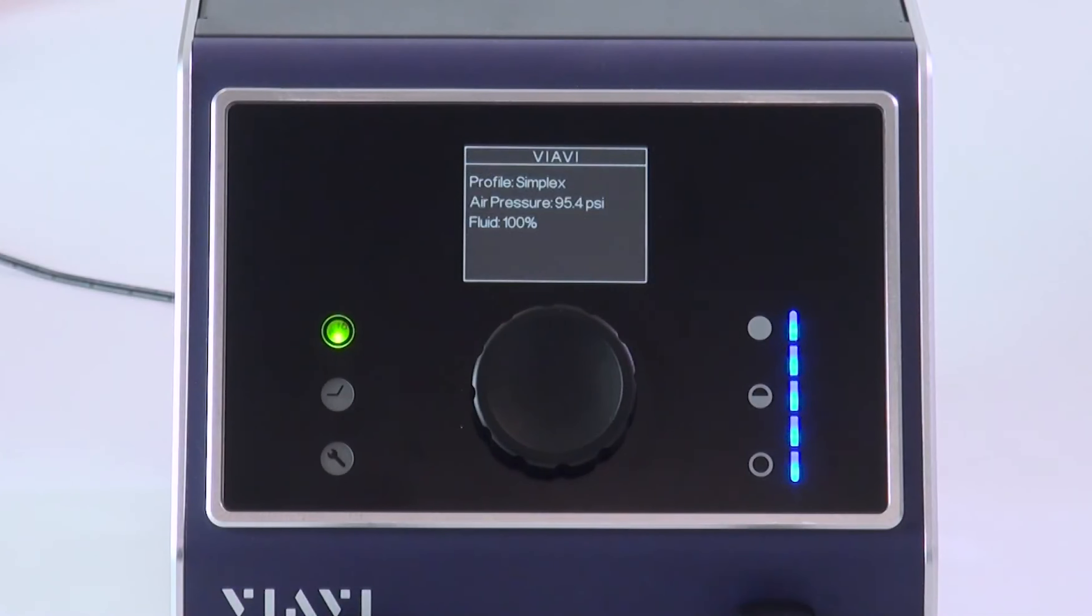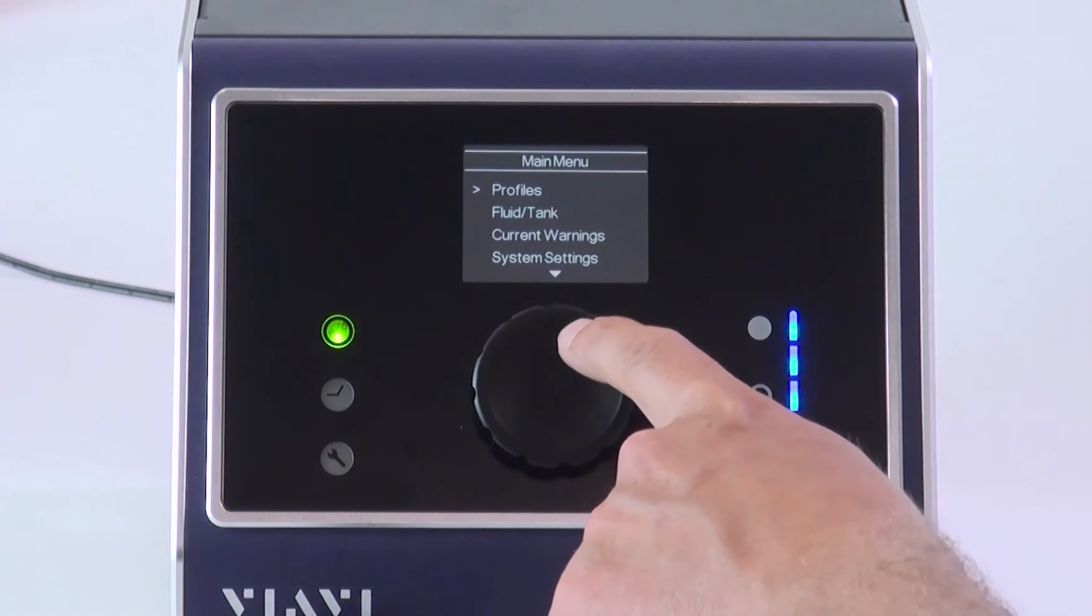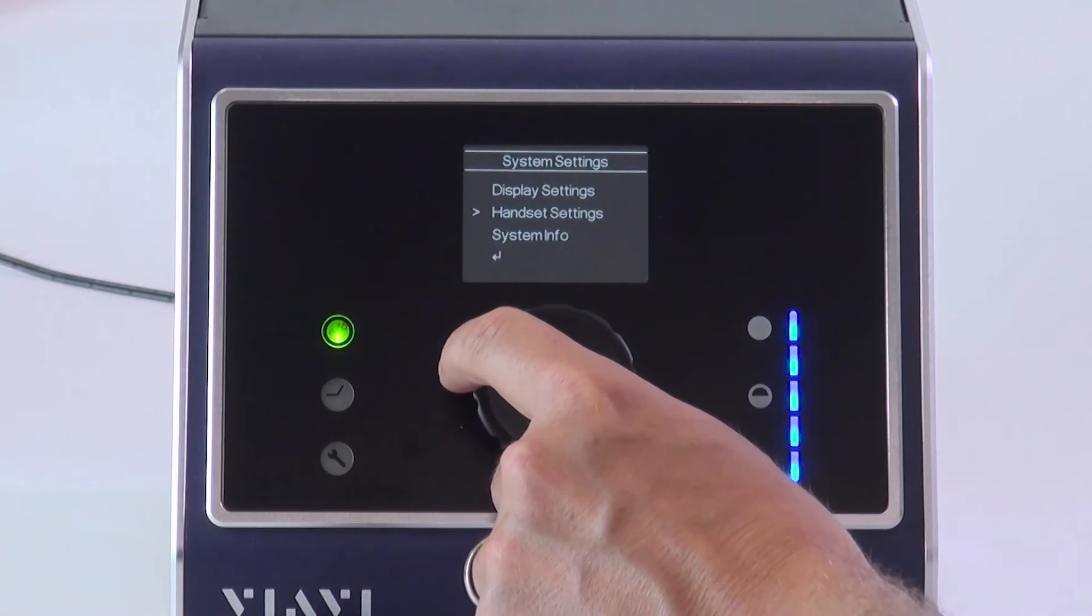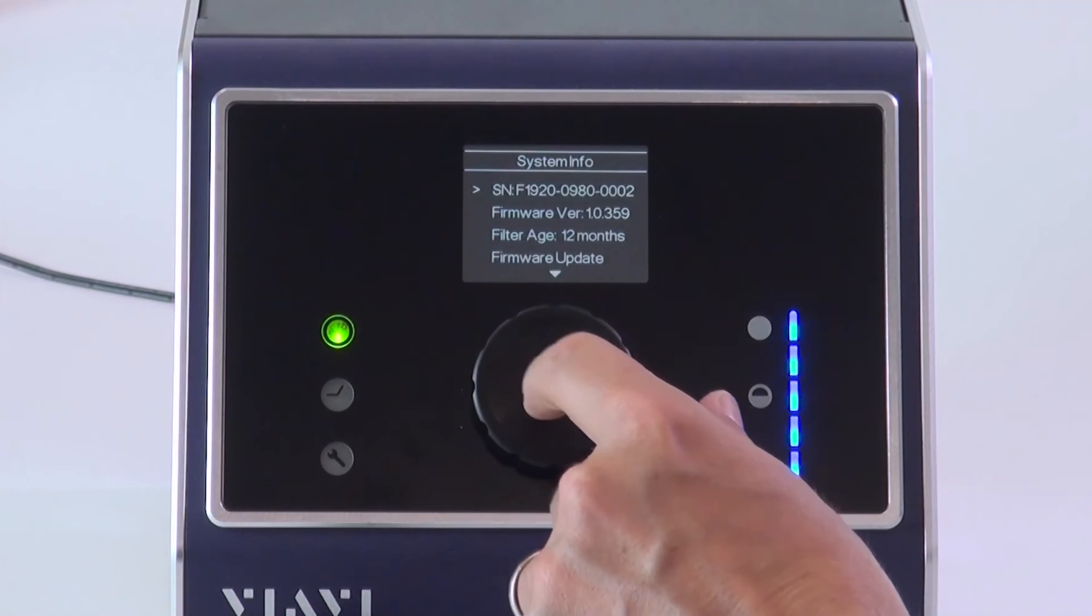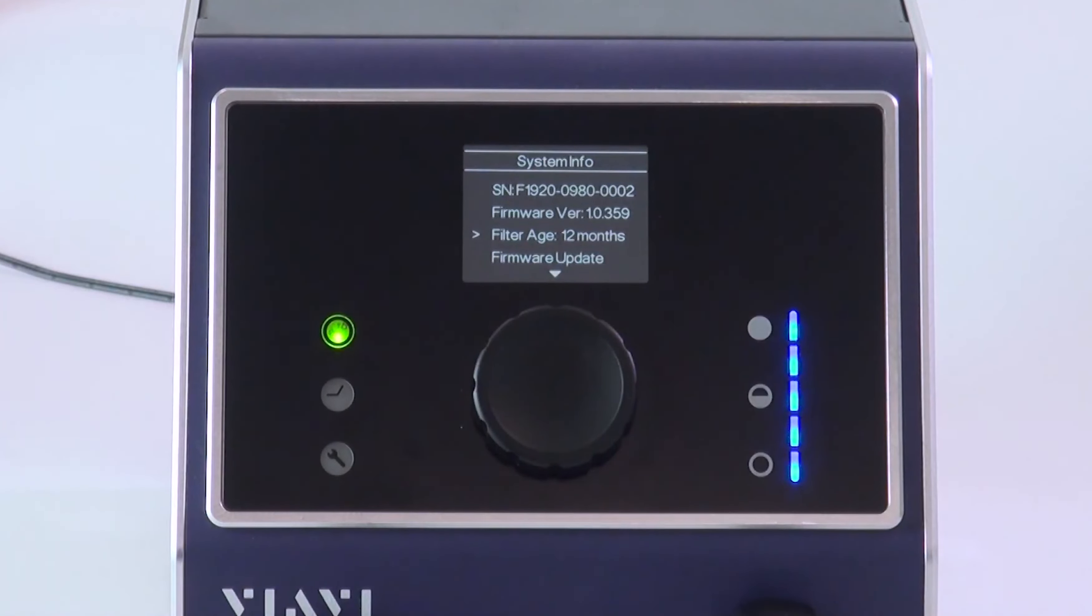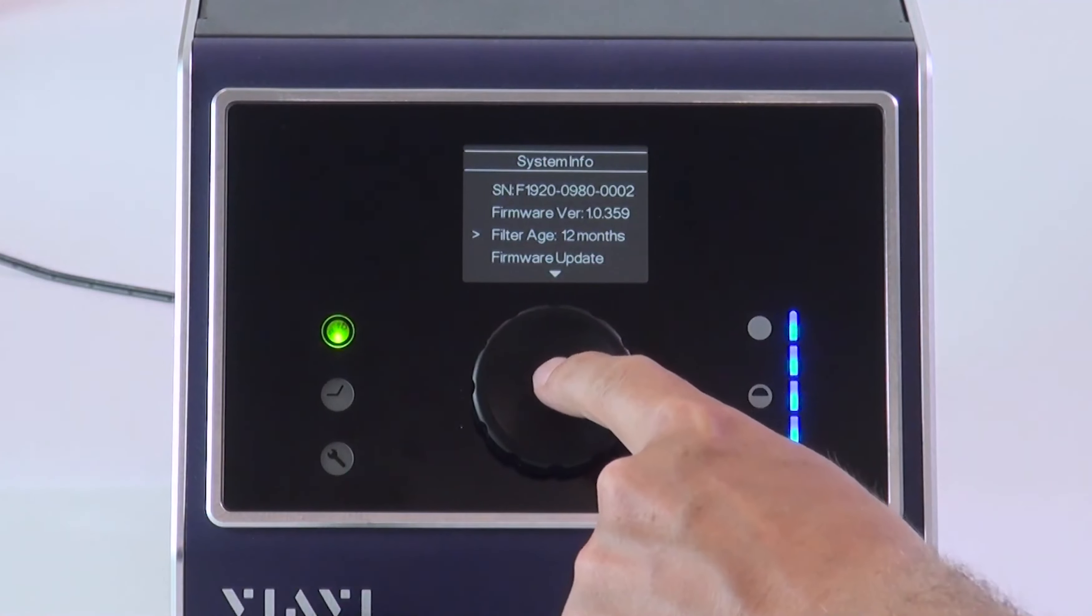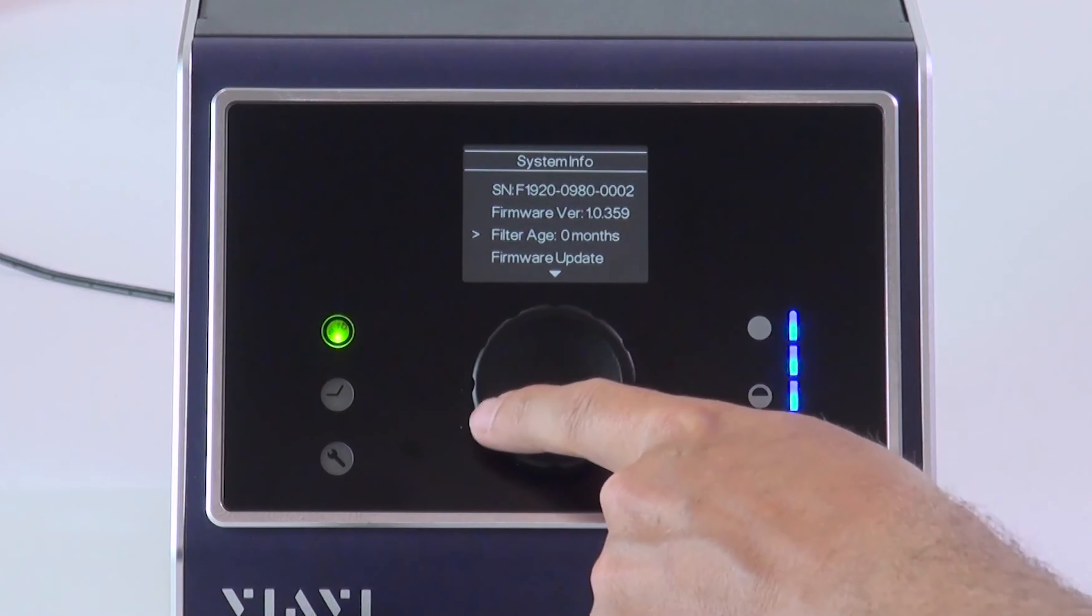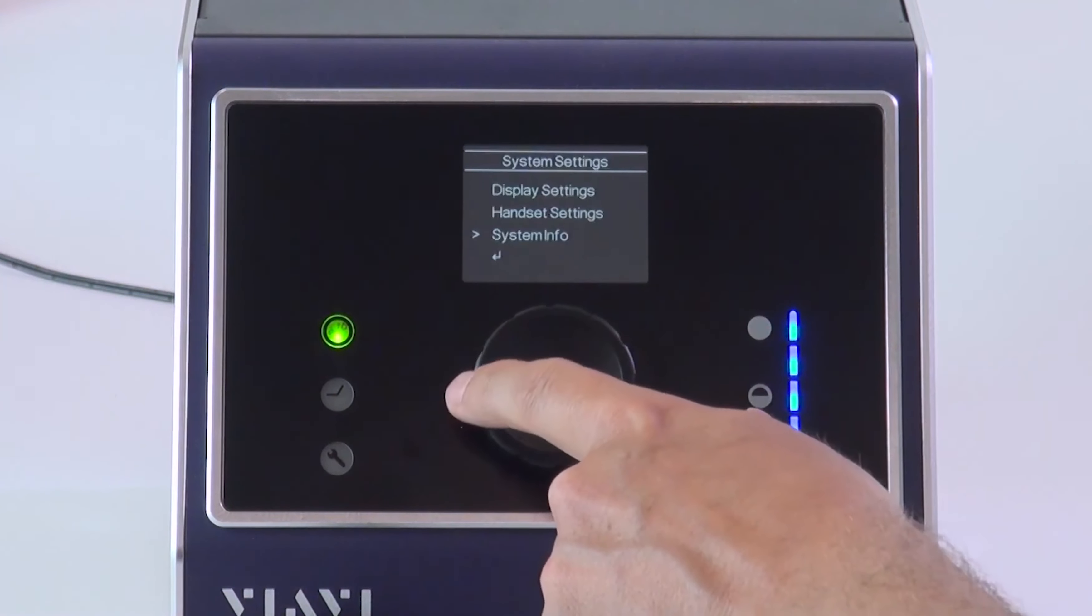we can go ahead and change the filter age menu. To do that, we go into system settings, system info, third one down is filter age and you can see it's currently at 12 months. All you need to do is press and hold. That now resets it to zero months and the counter will begin.